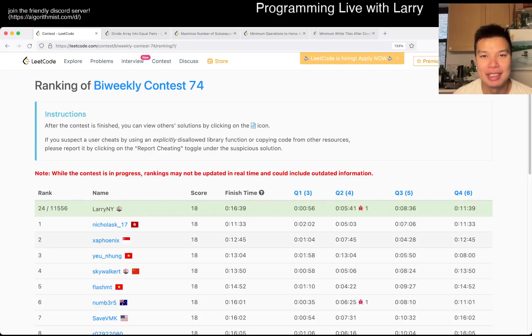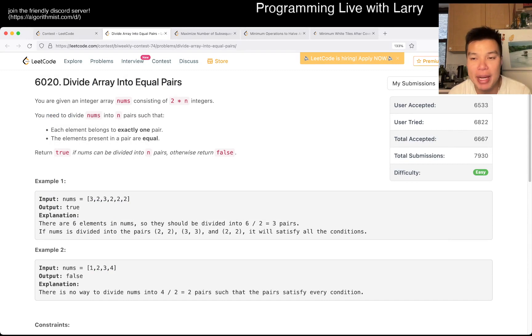Hey everybody, this is Larry. This is me going with Q1 of the bi-weekly Contest 74, divide array into equal pairs. Hit the like button, hit the subscribe button, join me on Discord, chat with me and other very smart people on Discord.